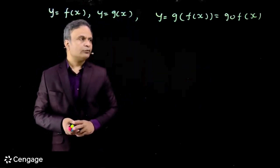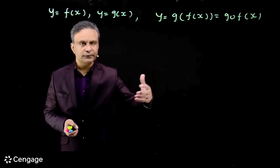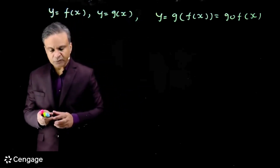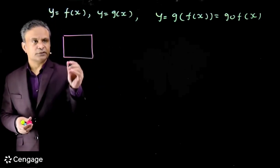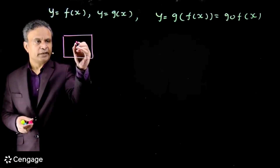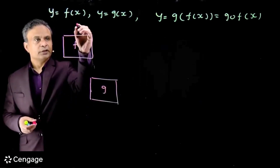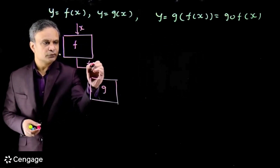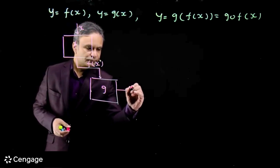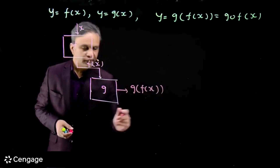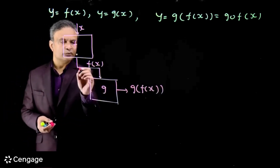Now clearly, the output values of function f(x) will be the input values to function g(x). We can describe this with a diagram — a function machine of f and a function machine of g. Here x goes in, f(x) comes out, and this f(x) is the input value to function g(x), from which g(f(x)) comes out. Input values to function g(x) are the output values of function f(x).